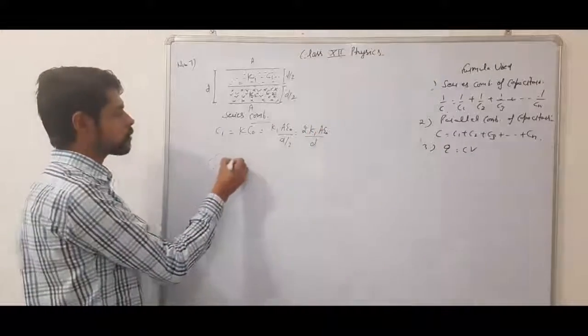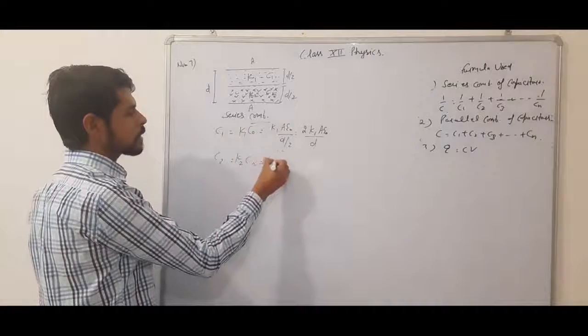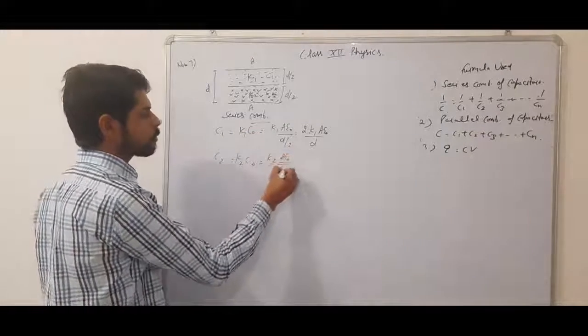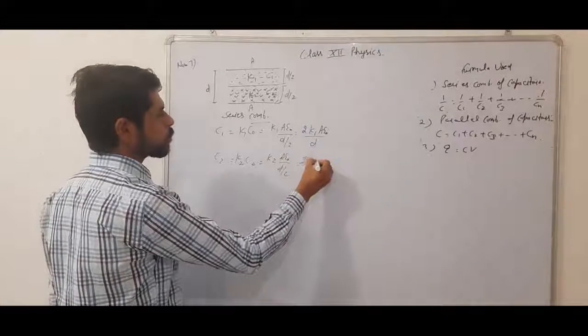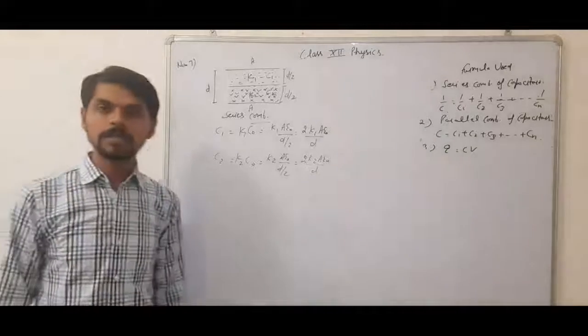This is capacitor C2, which is K2 C0, that is K2 A epsilon naught by D by 2, so it will be 2 K2 A epsilon naught by D. So we have two capacitors C1 and C2.